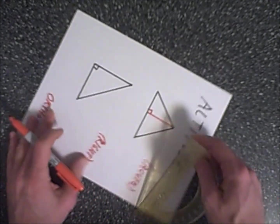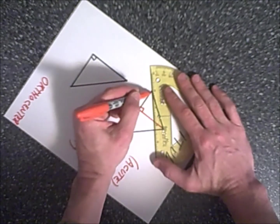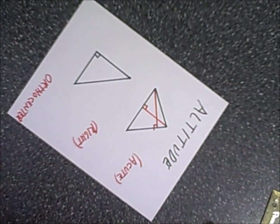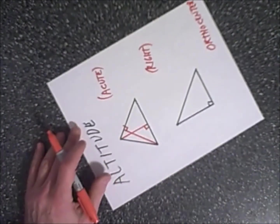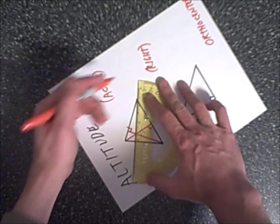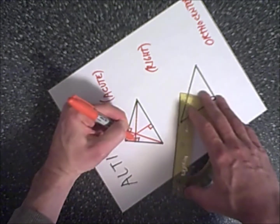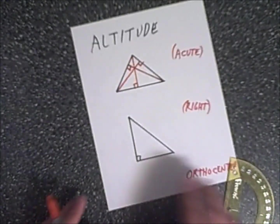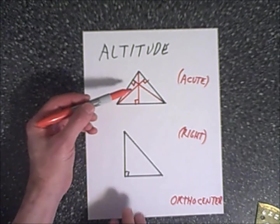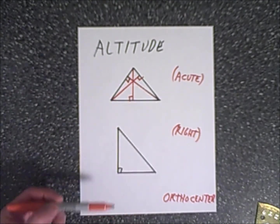We do the same for the other two vertices, creating right angles at each. The third altitude will cross right through where the first two intersected. For an acute triangle, all three altitudes meet somewhere inside the triangle, and this center is called the orthocenter.